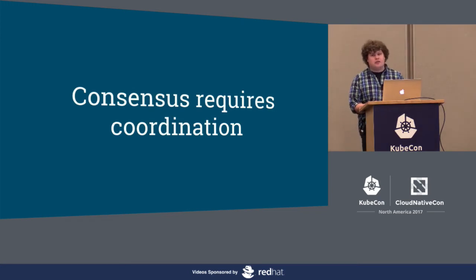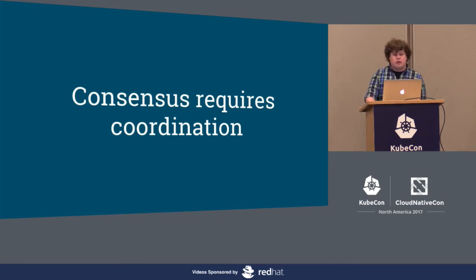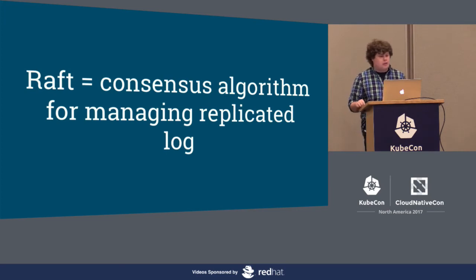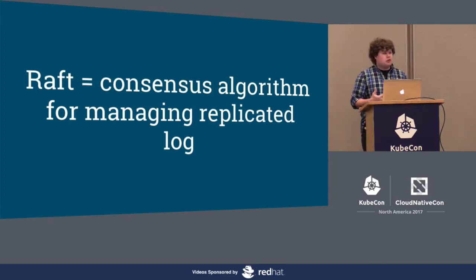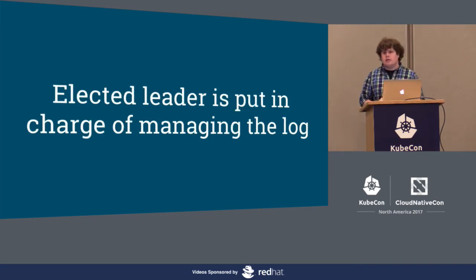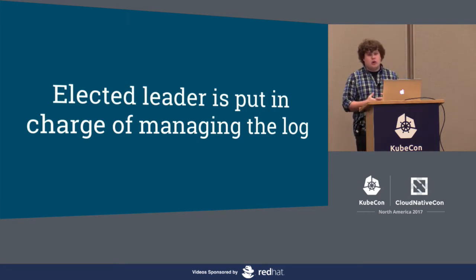Seemingly simple systems can fail in all sorts of fun ways when exposed to concurrent operations. In order for consensus to be achieved, we require greater coordination between nodes — we can't just fire and forget. This is where Raft comes in. Raft is a consensus algorithm for managing a replicated log — a series of commands executed in order by a state machine. We want each log to have the same commands in the same order so each machine will have the same state. To do this, Raft elects a leader, who manages the log, accepts entries from clients, replicates them to other nodes, and tells nodes when it's safe to commit them.